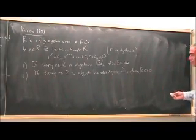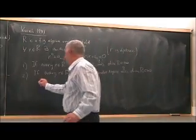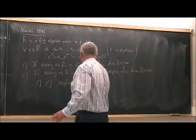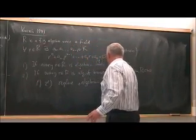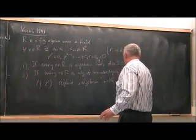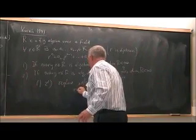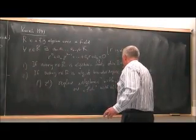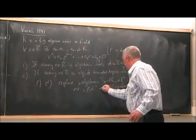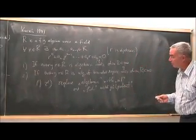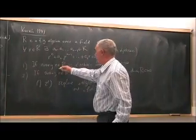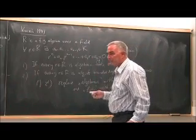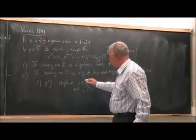And the other possibility is to replace algebraic with nil. So you have the first problem and the second problem: replace algebraic with nil, and of course again finite-dimensional with nilpotent. So the question is, if every element of the algebra is nil, is the algebra nilpotent? Or if every element is nilpotent of bounded degree, is also the algebra nilpotent?